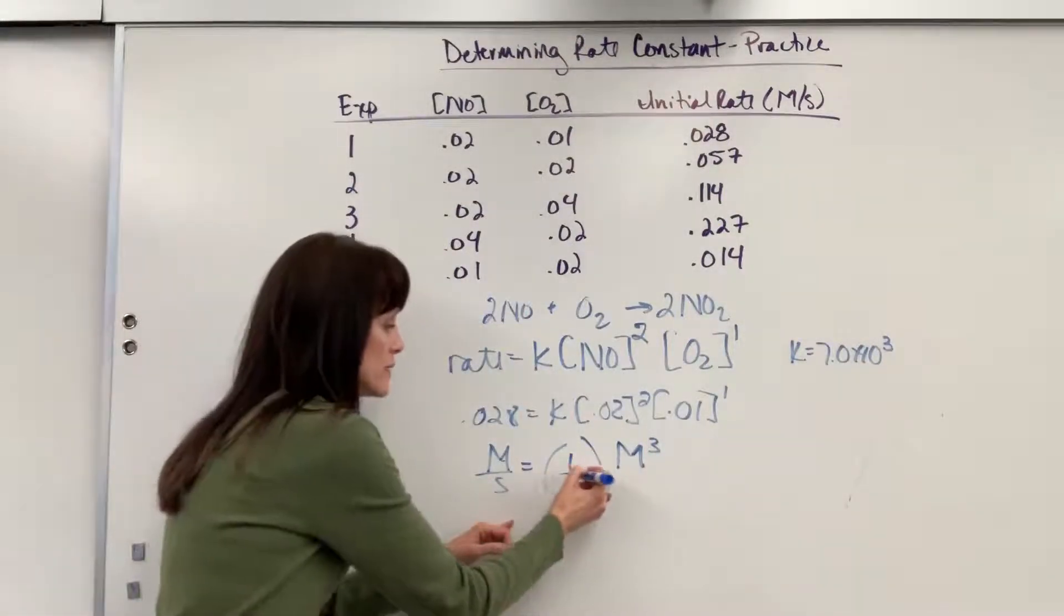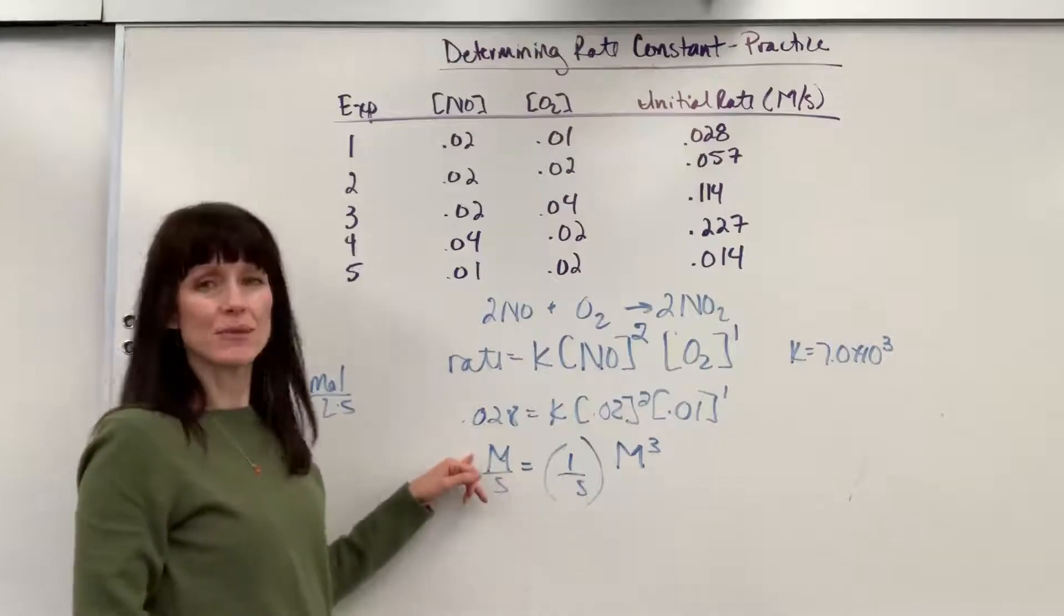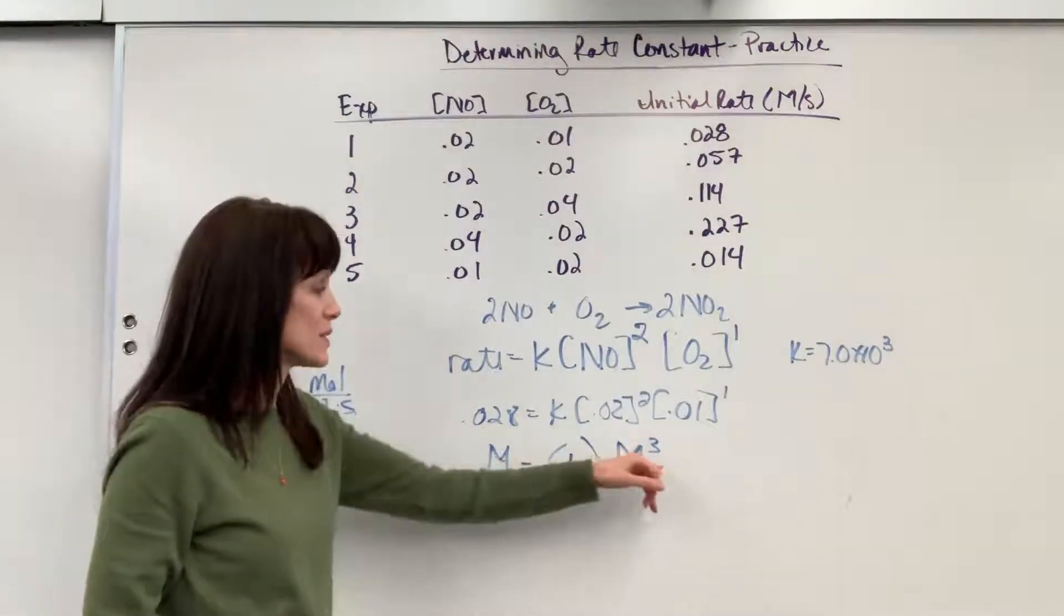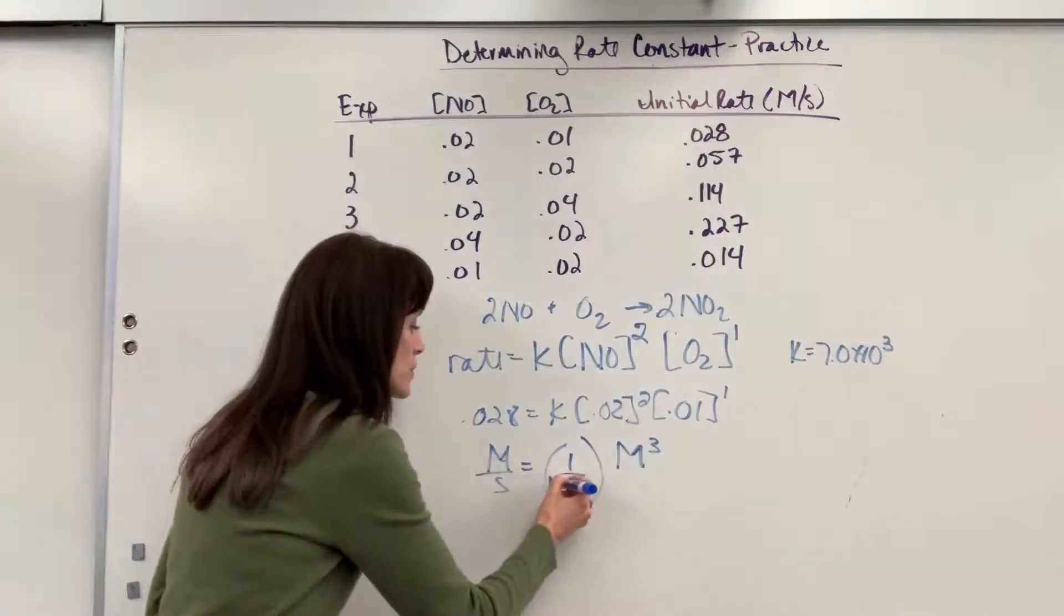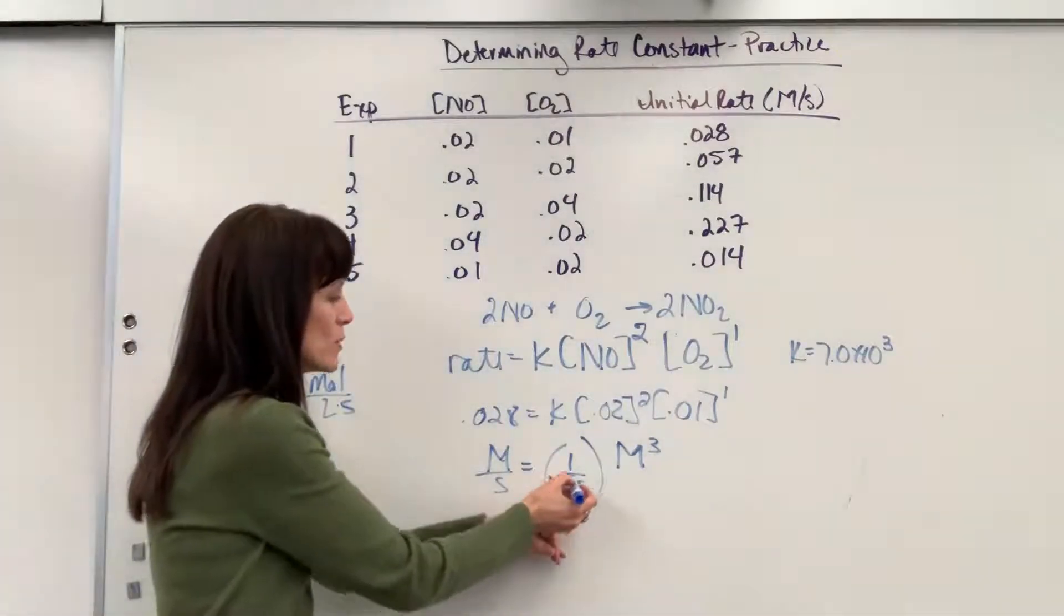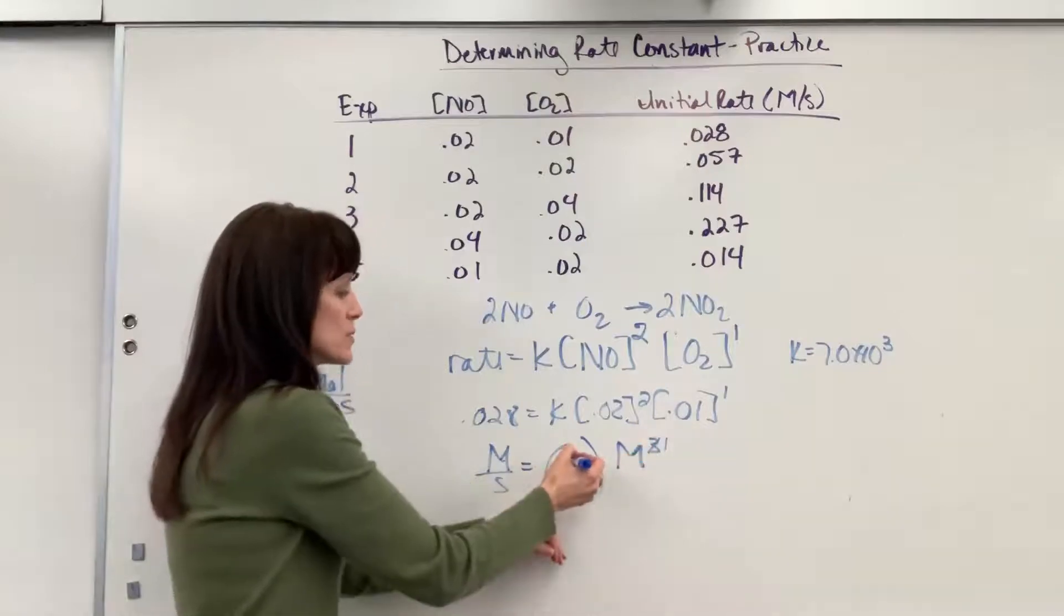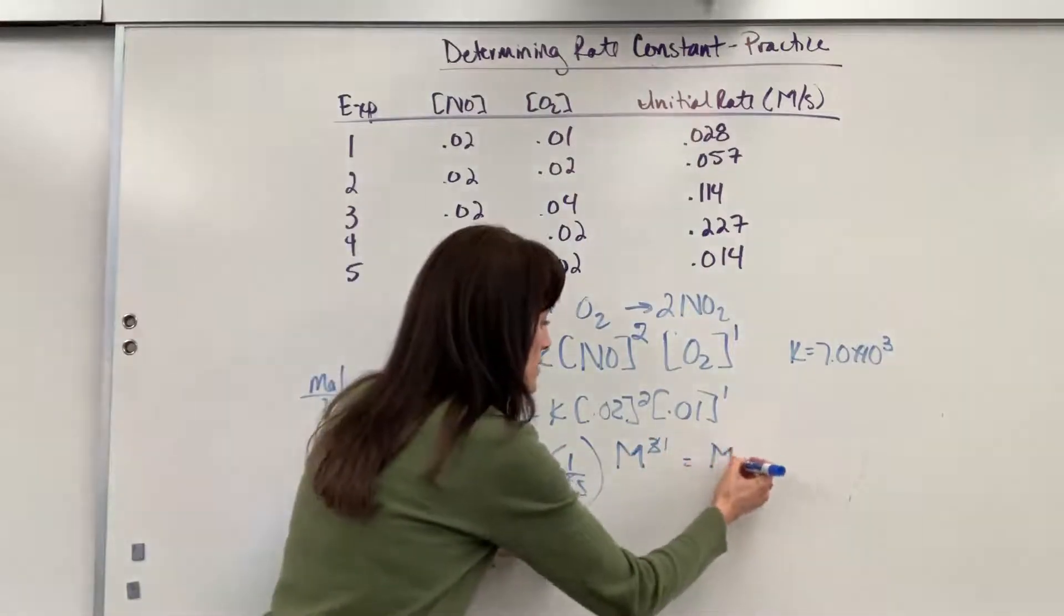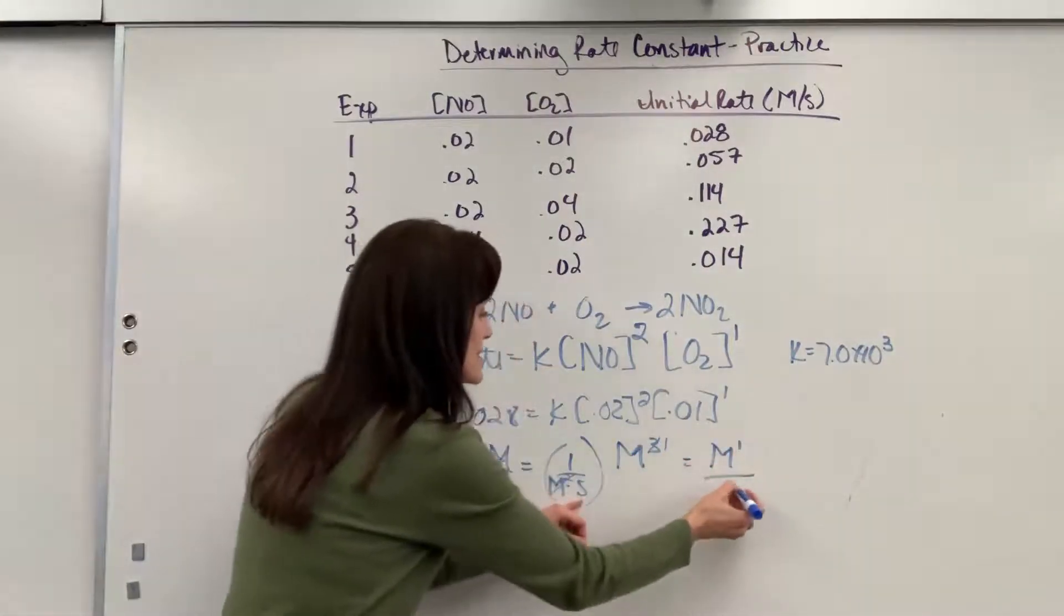Well, I would need a second in the denominator and I only need a molarity to the power of one. This is to the power of three. So I'd have to put molarity squared. Molarity squared would cancel two of those and leave one. So one times molarity to the one divided by second.